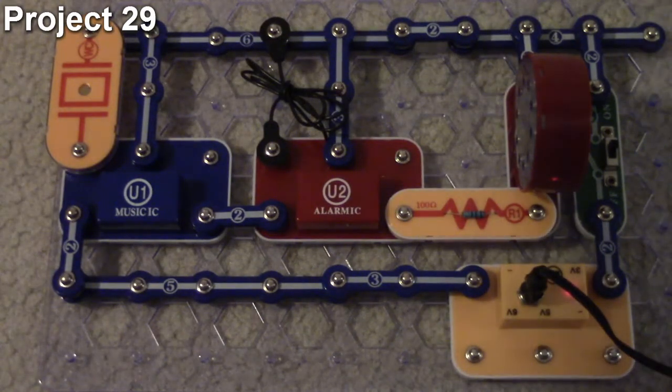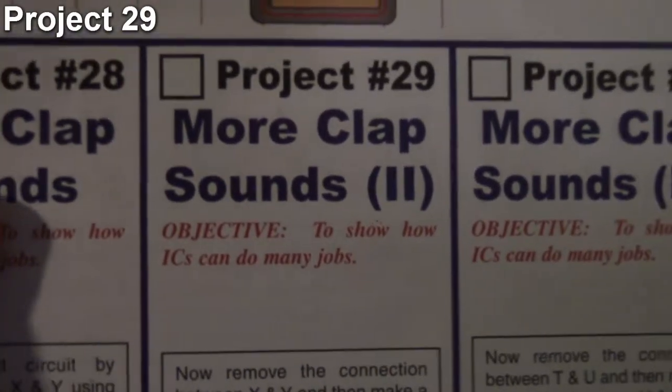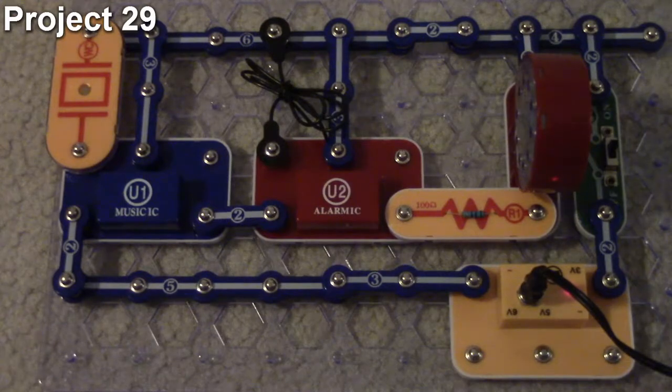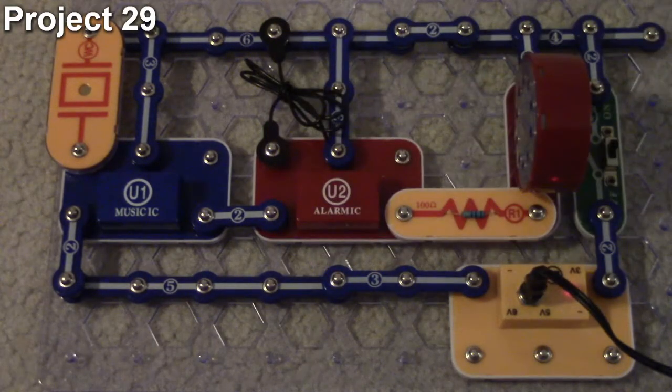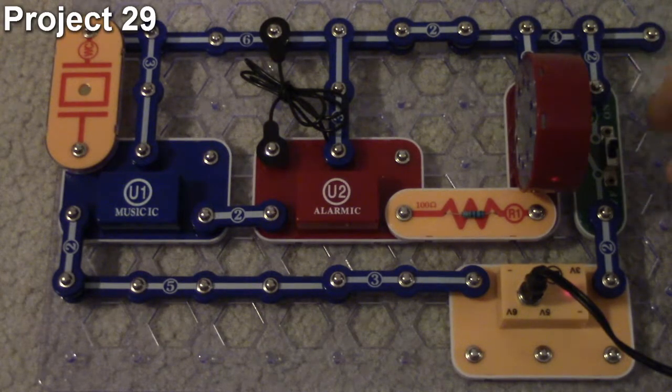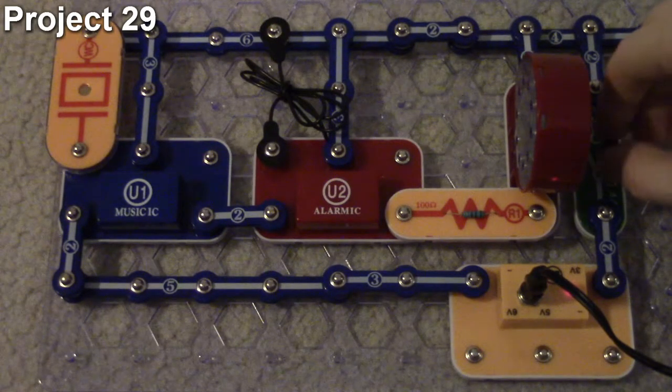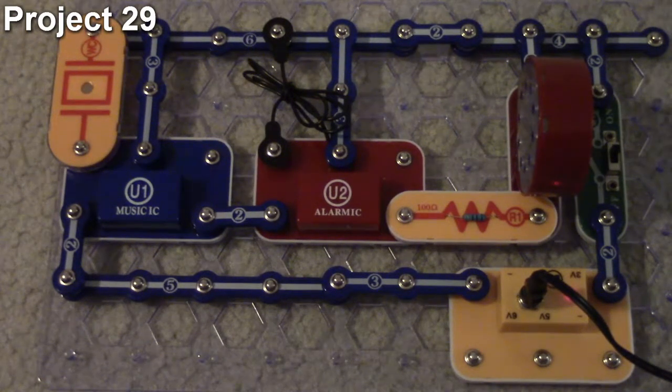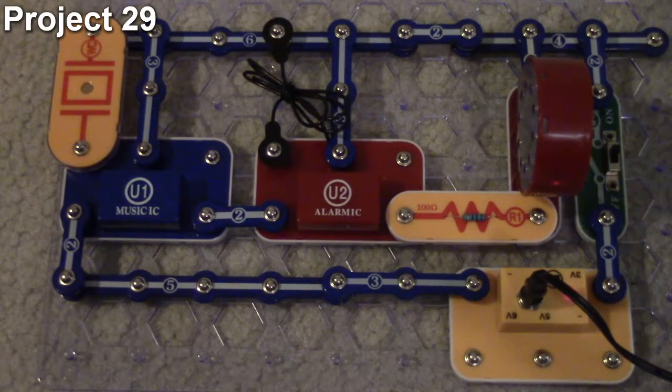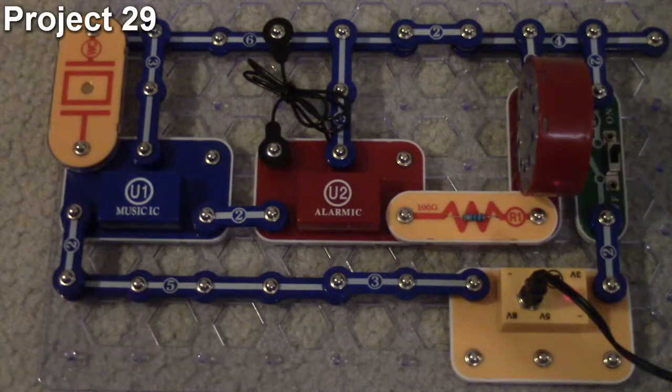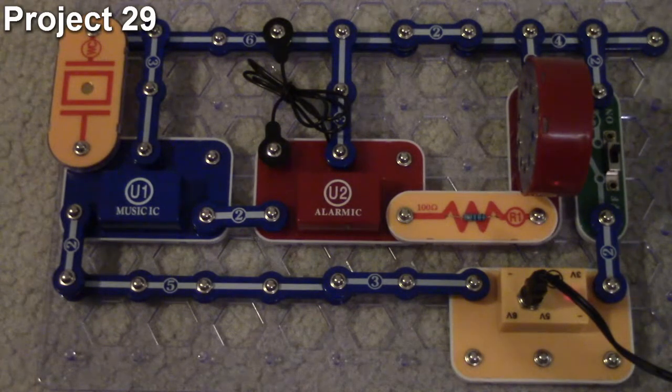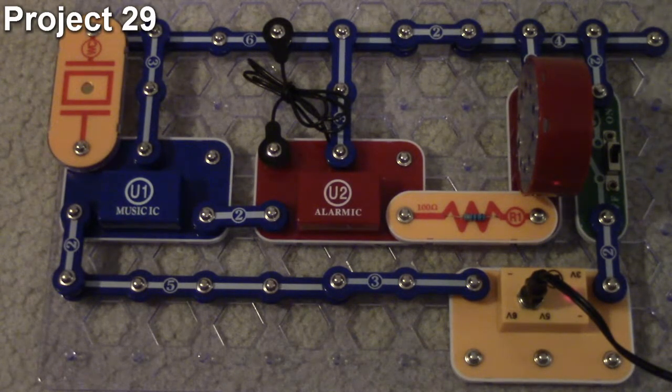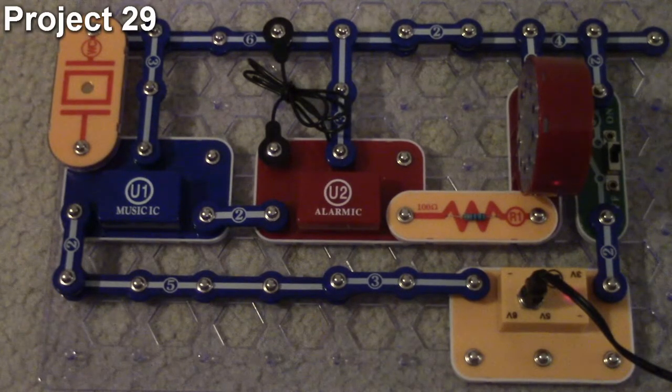So here we are with project number 29, and it's more clap sounds 2. Our objective here again is to change the audio around, and we moved our jumper cable from here over to that input now, and they say it's supposed to sound like a fire engine. I guess it could be a fire engine. And again, I tap the whistle chip and it already starts. So that's pretty much how project 29 works, let's move on to project 30.